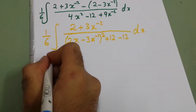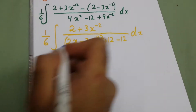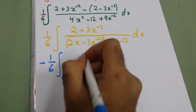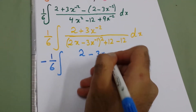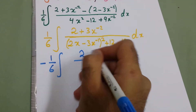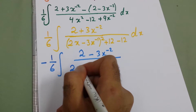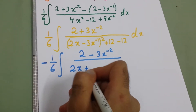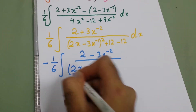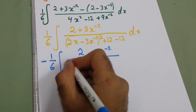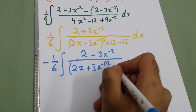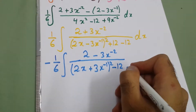The second one is the same thing. We have minus 1 over 6, integral of (2 − 3x⁻²). Since we have a minus, we complete the square to make it (2x + 3x⁻¹)². Here we add 12, so we subtract 12, and we also have minus 12, dx.